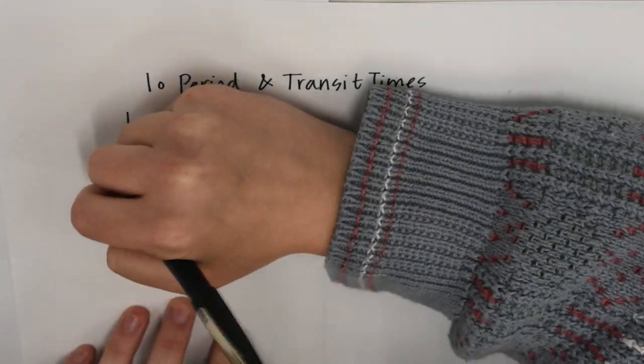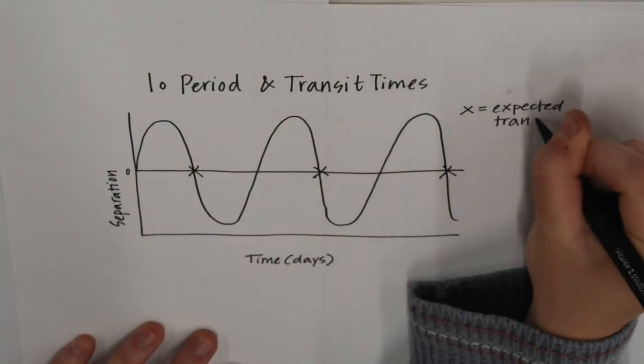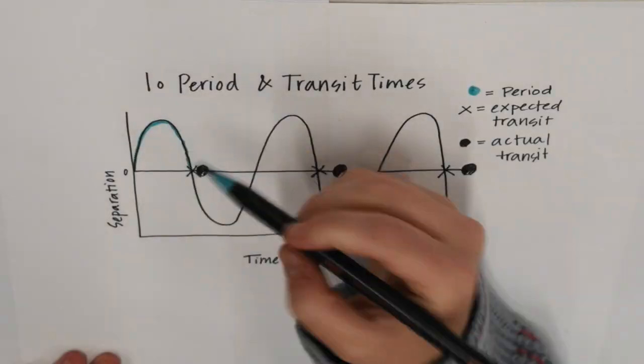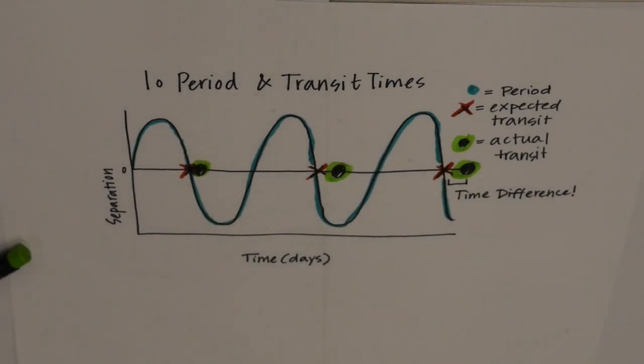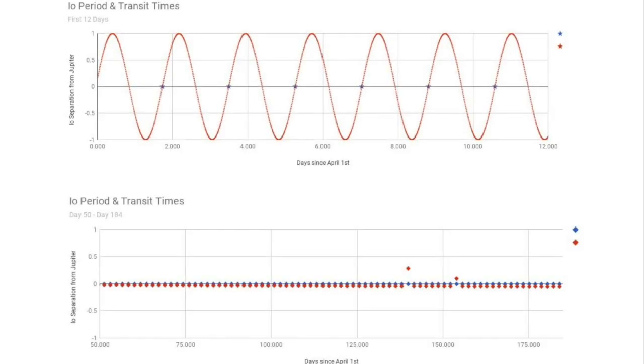As the sine wave continues to later dates, the times of transit gradually occur later than we would expect if the speed of light were infinite. The top graph shows the transits occurring when we would expect, on time with the period. This occurs in the first 15 days.